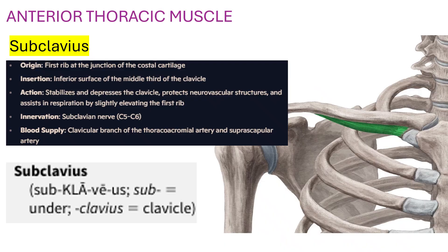Let's start with anterior thoracic muscles. One is Subclavius. The origin is the first rib, at the junction of the costal cartilage. Insertion is the inferior surface of the middle third of the clavicle. Action: stabilizes and depresses the clavicle, protects neurovascular structures, and assists in respiration by slightly elevating the first rib.